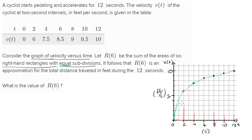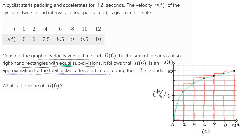Let me draw the tops of the six right-hand rectangles — first, second, third, fourth, fifth, and sixth. They tell us that R(6) is the sum of the areas of these rectangles, and that R(6) is an approximation for the total distance traveled in feet during the 12 seconds. Why is the sum of these areas an approximation for total distance? Before calculus, you learned that if you have a constant rate, distance equals rate times time.